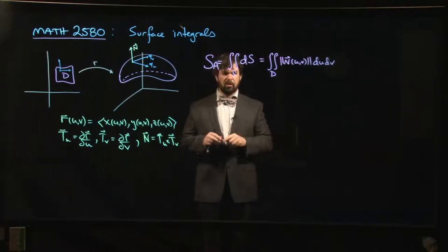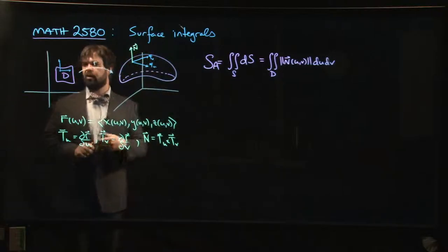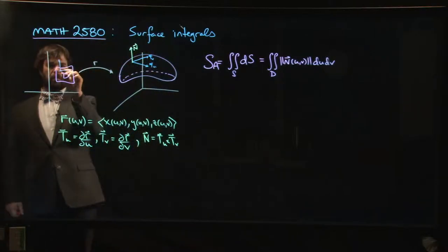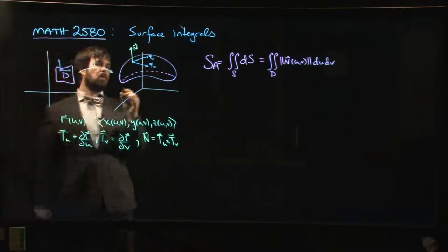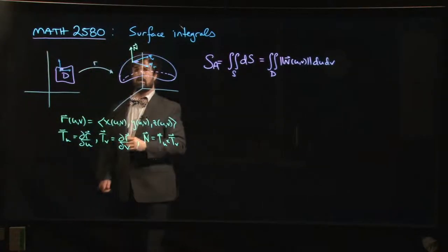So the idea here is that the role that the magnitude plays is that if you have a little rectangle over here in your parameter domain, that's going to correspond to some little parallelogram over here on the surface.